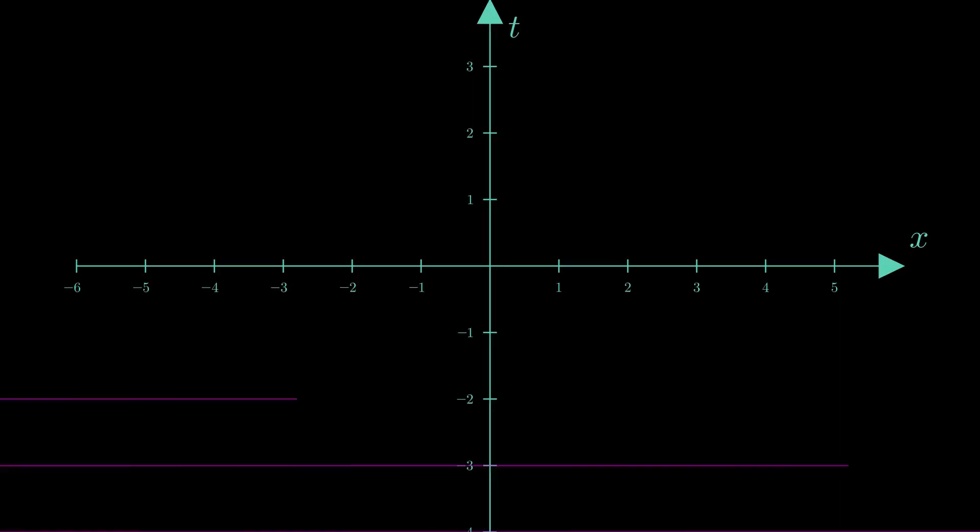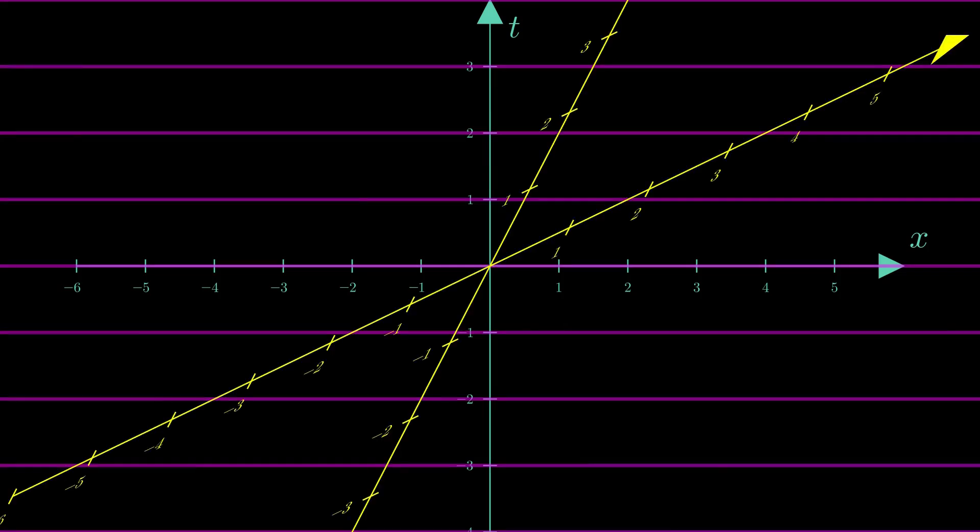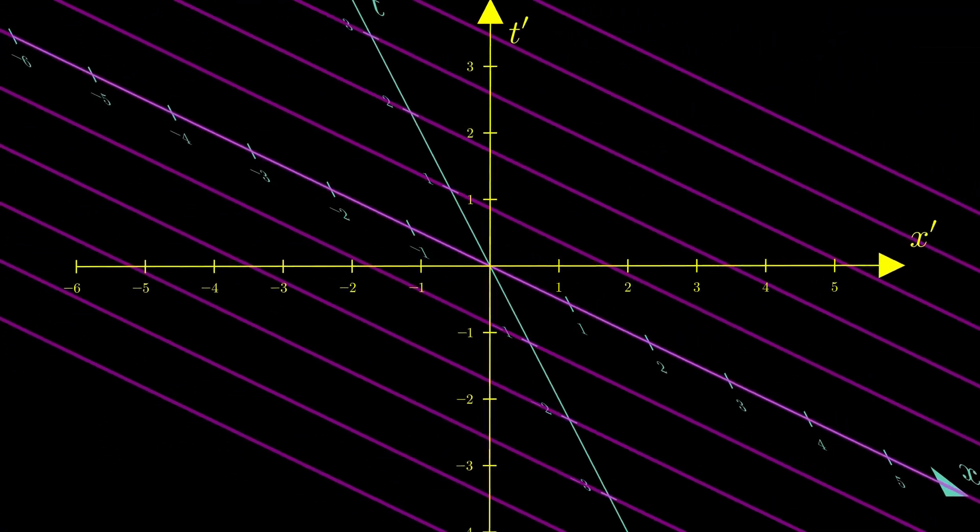The horizontal lines represent the wave crests of a spatially uniform oscillation. The yellow coordinate axes represent the frame of a moving observer, or a frame where the particle is seen as moving. Let us transform into that moving frame. By the properties of Lorentz transform, the horizontal lines tilt.